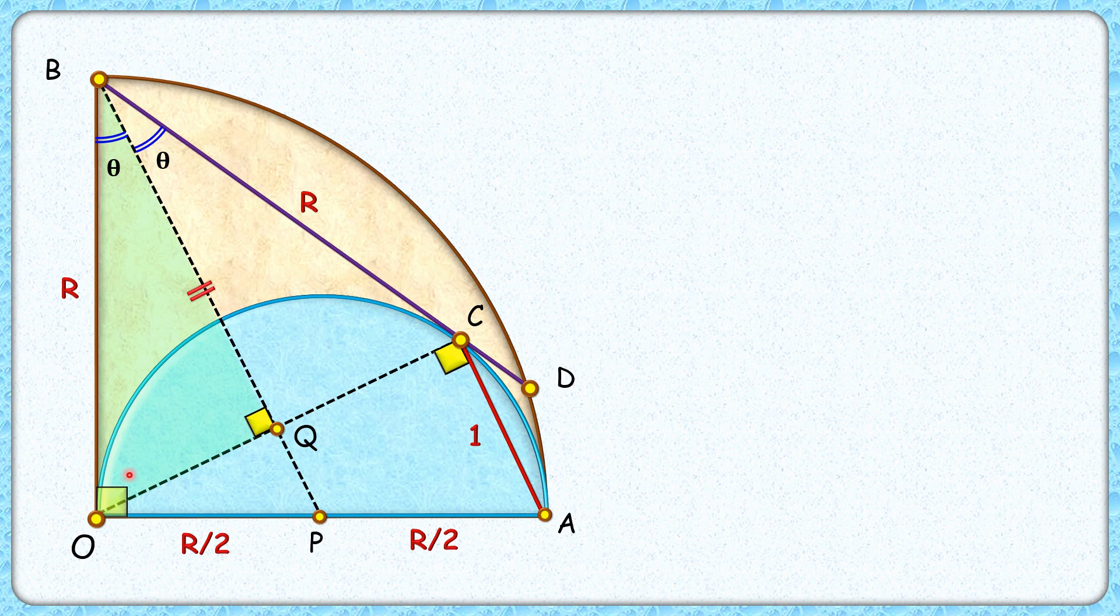Now in this green triangle, applying angle sum property, we'll get this angle as 90 minus theta. The complete angle is 90, and thus this remaining angle will be again theta degrees.